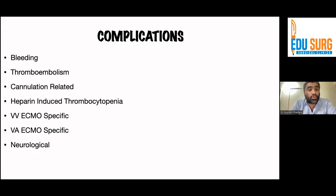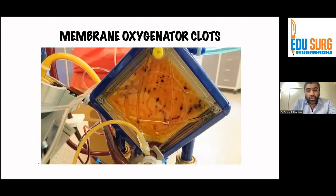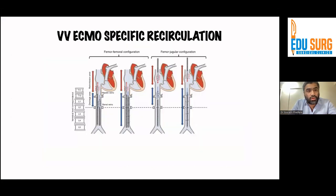Coming to the complications — complications could be because of the cannulation itself. At the site of cannulation, there could be bleeding, hematoma formation, thromboembolism, cannulation-related complications, heparin-induced thrombocytopenia, and von Willebrand factor deficiency when on ECMO. There are various complications which are VV-ECMO specific or VA-ECMO specific. Neurological complications including bleeding could occur. This is how a membrane oxygenator looks like with clots in it.